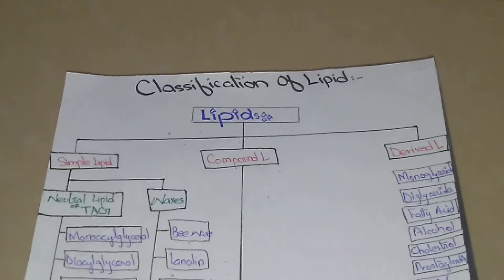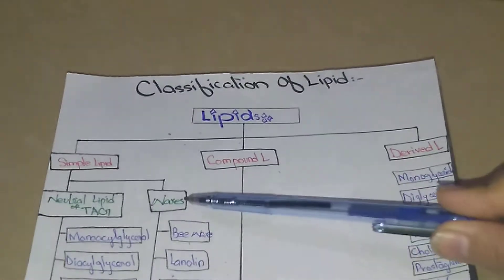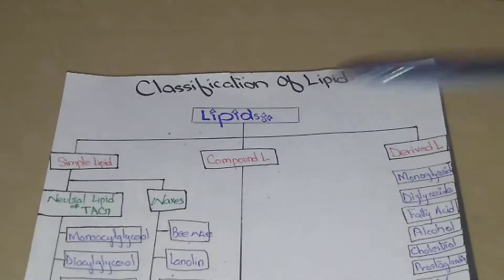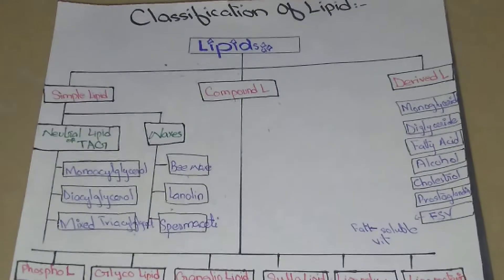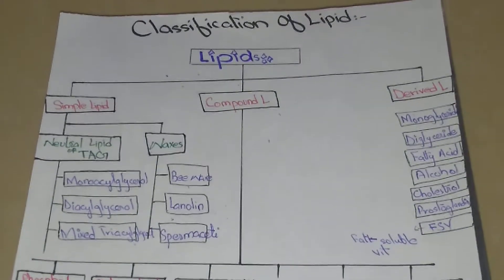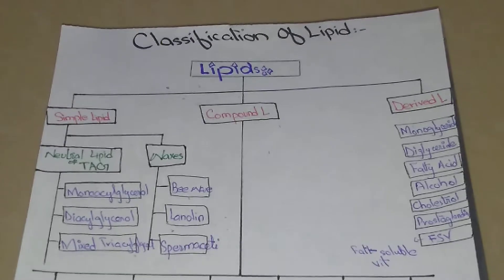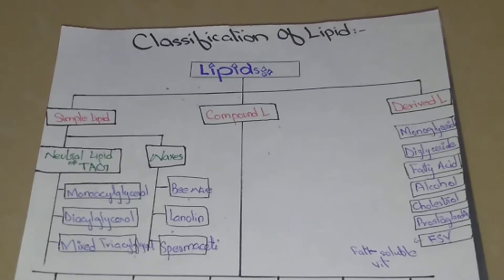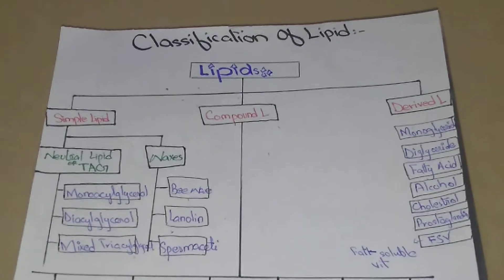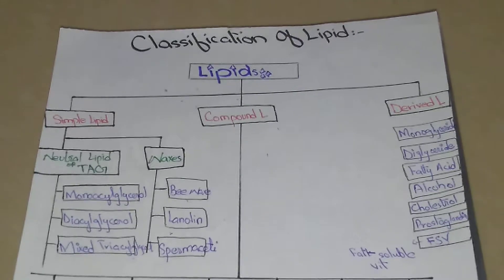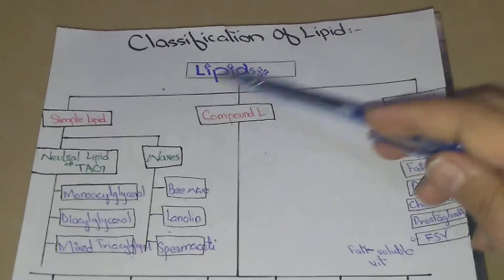Now we first discuss simple lipids. Simple lipid is an ester of fatty acid with alcohol, and they further divide into two types: neutral lipid and wax. Neutral lipid is also called triacylglycerol. The difference between neutral lipid and wax is that neutral lipid is an ester of fatty acid with glycerol, whereas wax is defined as an ester of fatty acid with an alcohol other than glycerol.